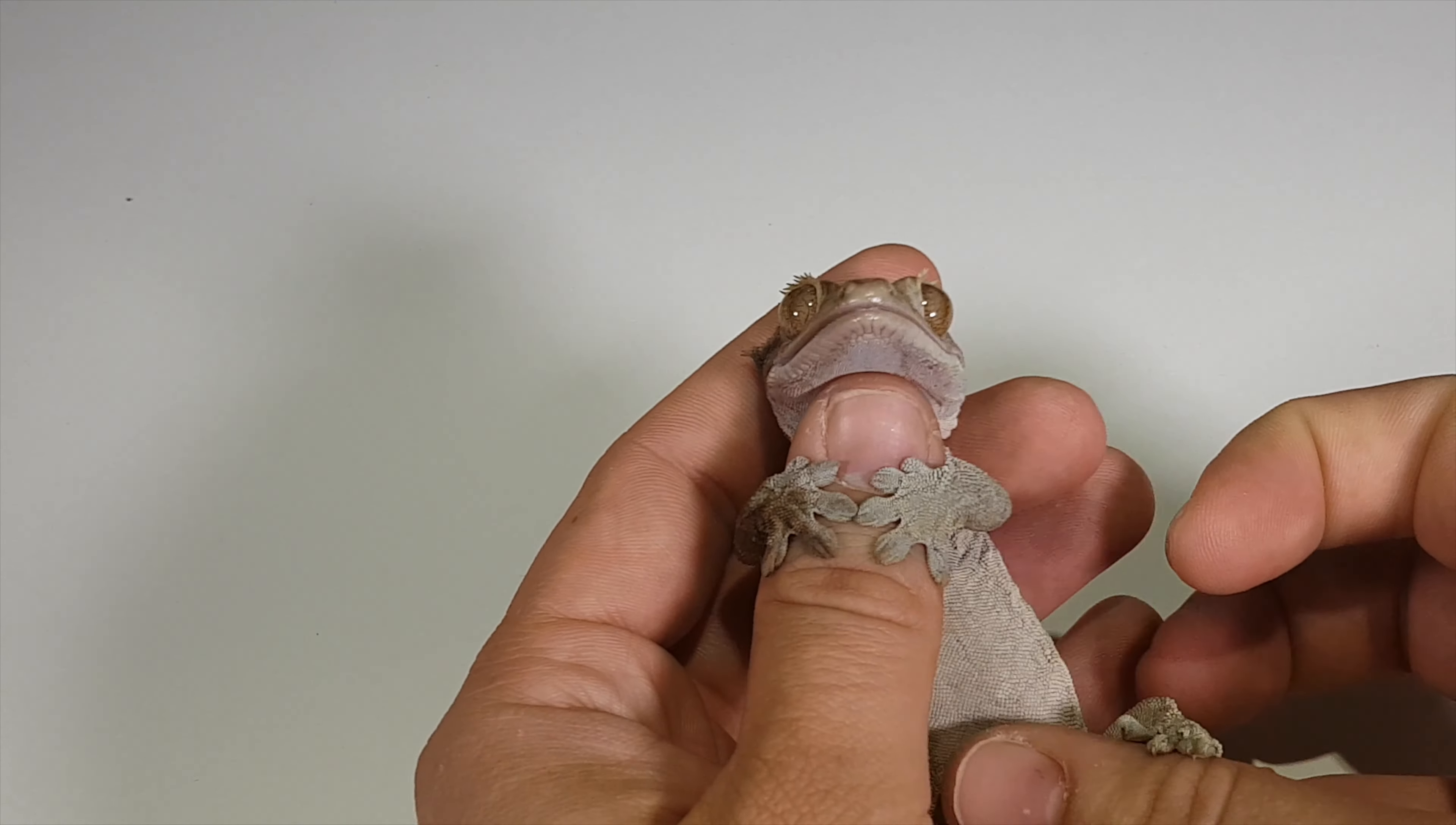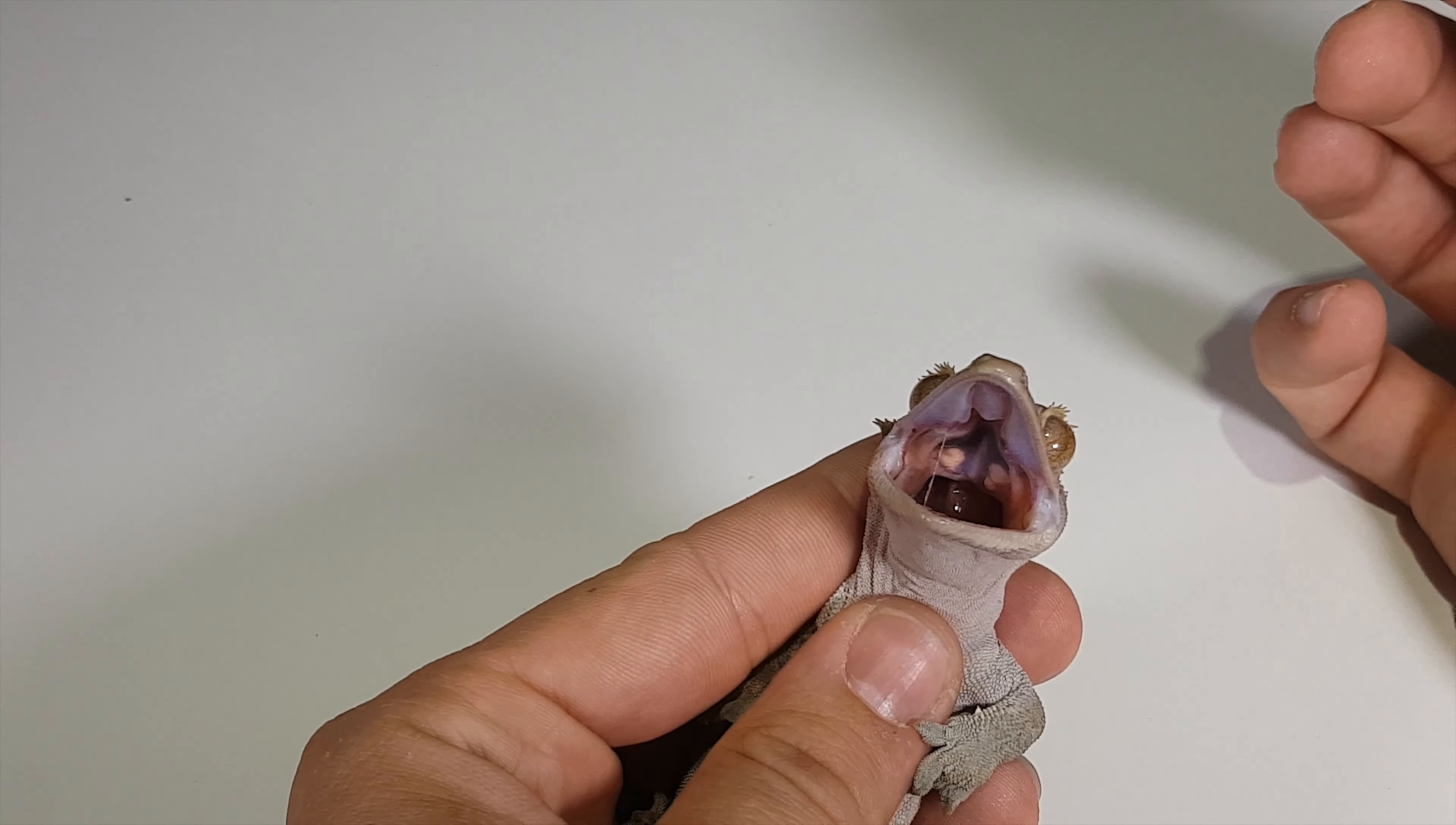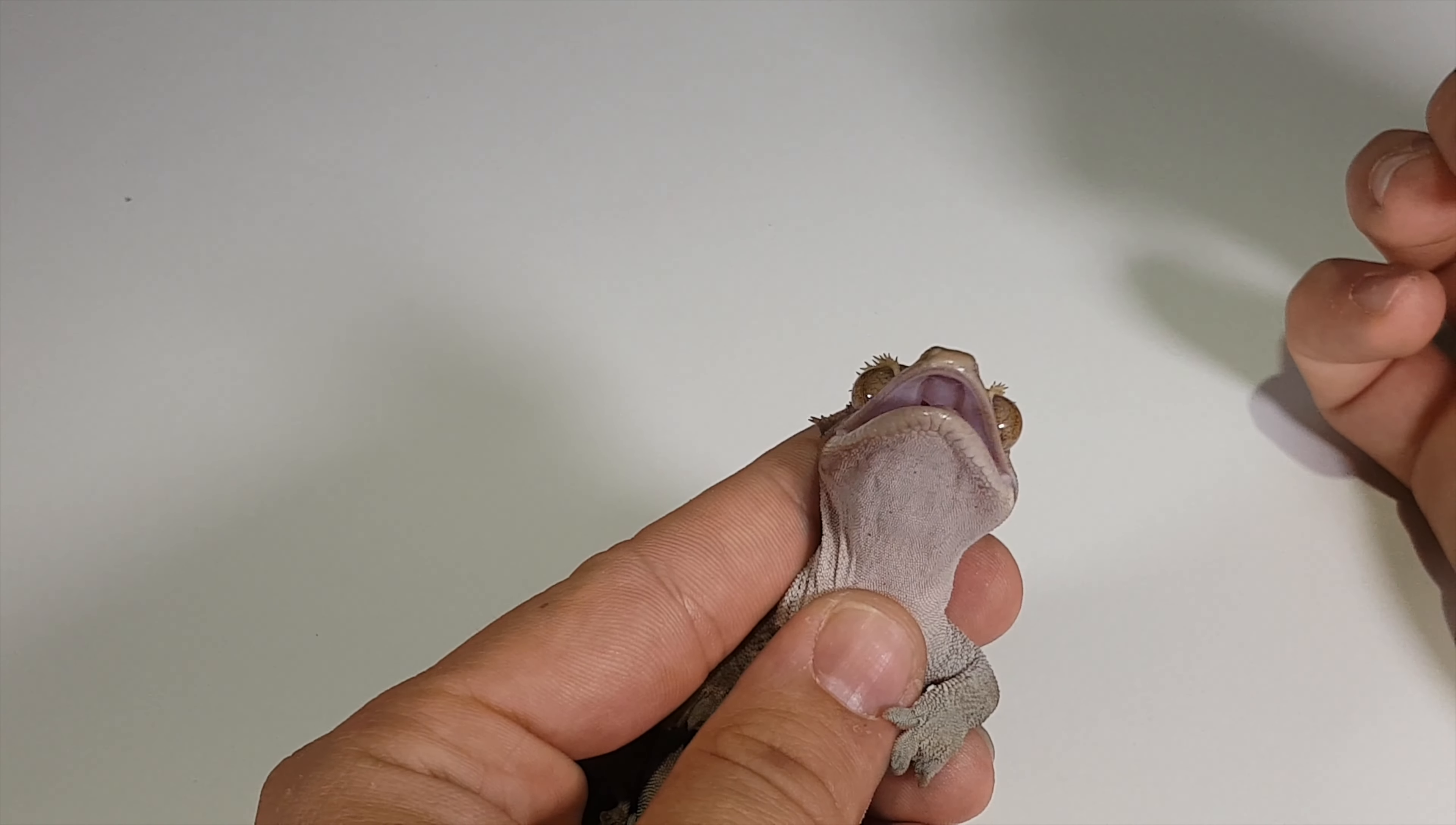So let's see her calcium sacs. Same thing, hold her by the collarbone, rub the cheeks. She's a little bit easier because she gets pissed off easy. And you can see the calcium sacs in there. See one more time. See that nice white pockets there? That shows that she's good on calcium.